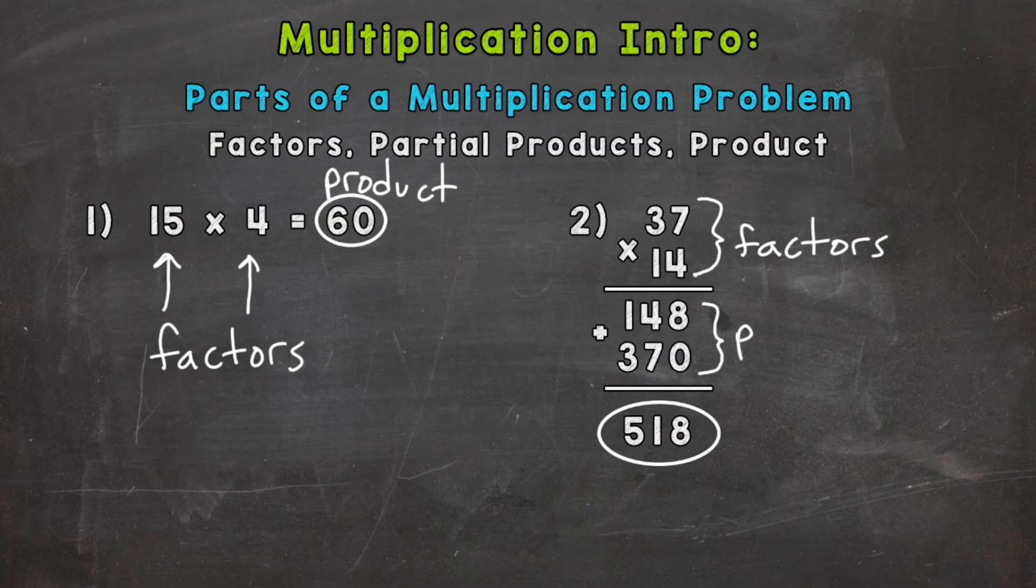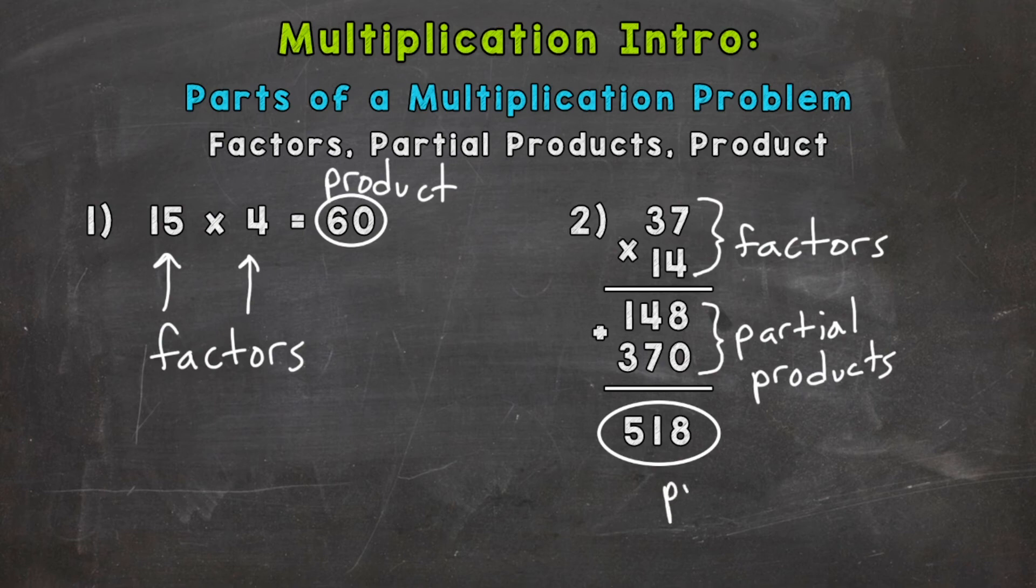These are called partial products. And it makes sense. They're part of our final answer or product. So these are our partial products. And then lastly, our answer, an answer to a multiplication problem, is called the product.